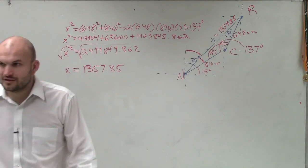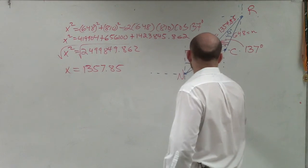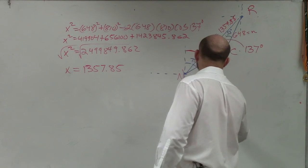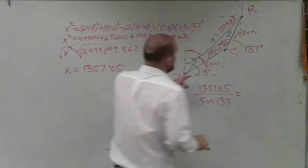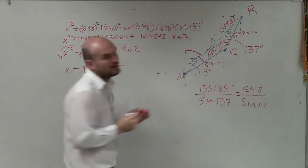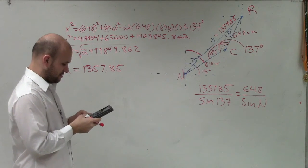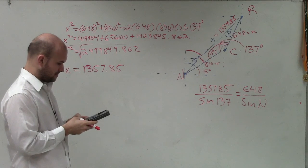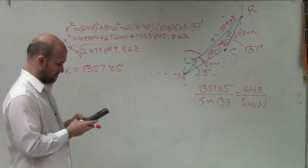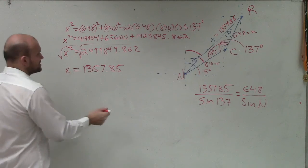So if we look at this, we need to figure out what this angle is. So the only way to find that angle is now we can go and use the law of sines. Since we now have a relationship, I can say 1,357.85 over the sine of 137 now equals 648 over the sine of n, where n represents Niagara. So now I go and solve this very, very quickly. And then take the inverse sine, and I get 18.99, which is 19 degrees.